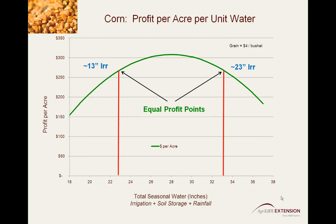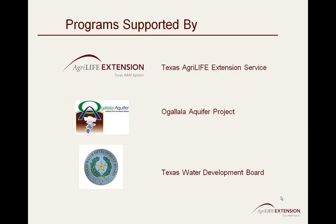Irrigating to meet the peak profit point, or to the left of the peak profit point, will ensure that the water resource is used in the most effective and responsible way, promoting sustainable, economically sound production agriculture. This video is delivered by cooperative support and funding from the Texas AgriLife Extension Service, the Ogallala Aquifer Project, and the Texas Water Development Board.